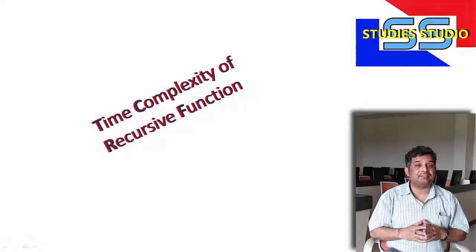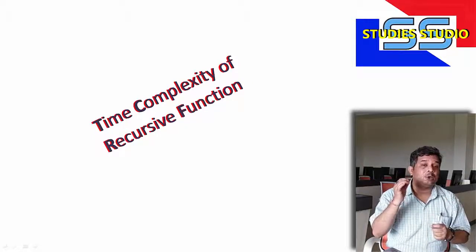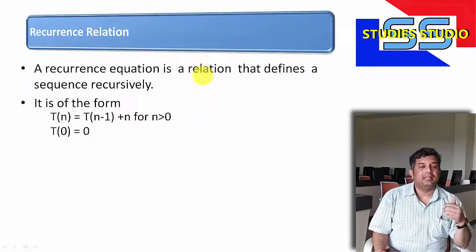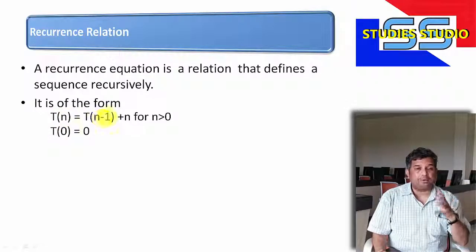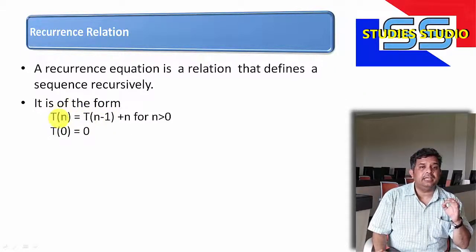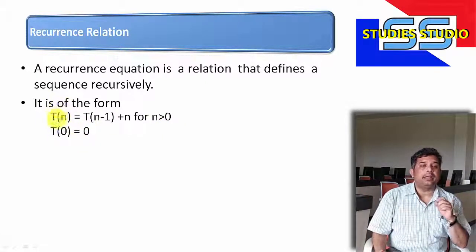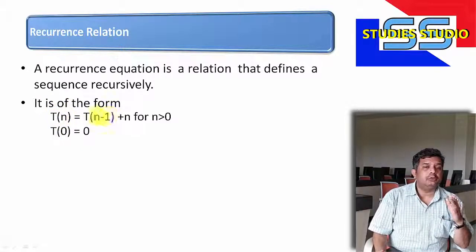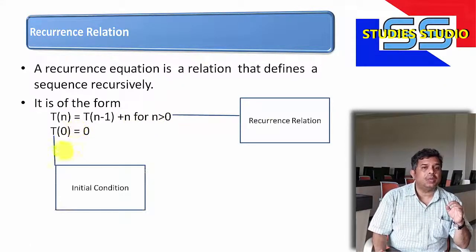In our previous two videos, we have seen how to find time complexity of iterative functions. Today we are going to see how to find time complexity of recursive functions. A recurrence relation is a relation that defines a sequence recursively. For example, T(n) = T(n-1) + n for n greater than 0, and T(0) = 0. The same function is used in its own body. This part is called a recurrence relation, and this is called an initial condition or base condition. Based on the base condition, the recurrence relation will terminate.